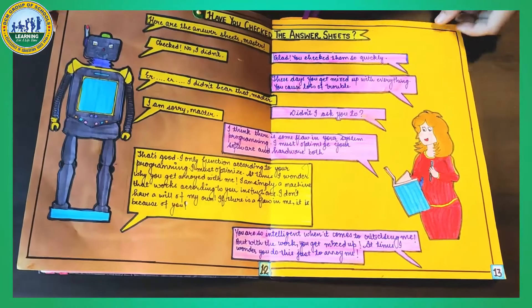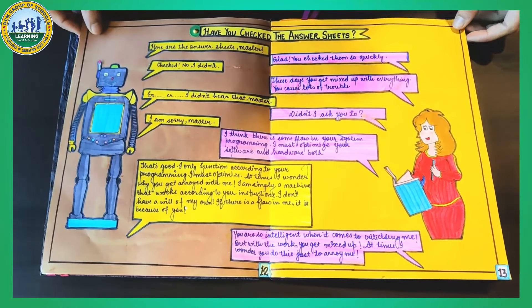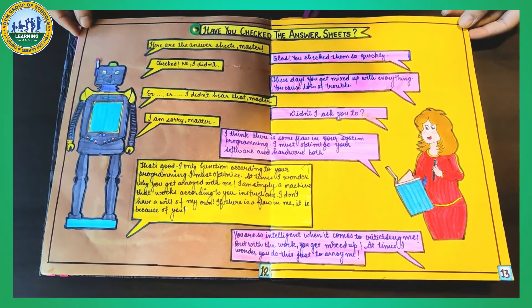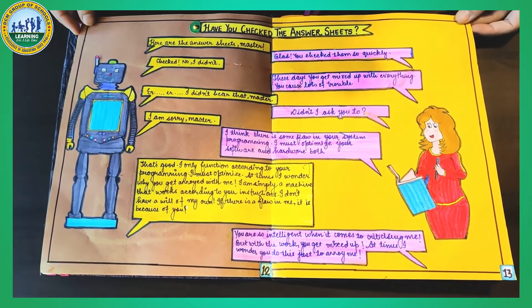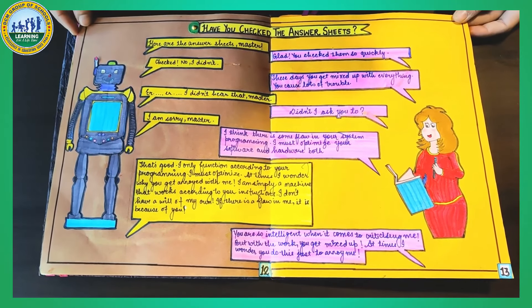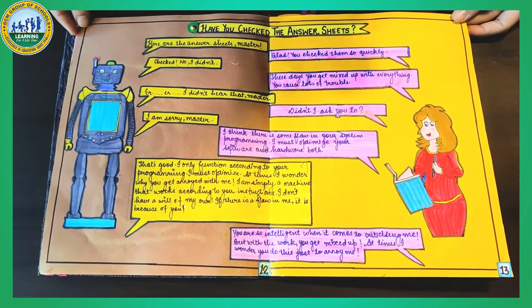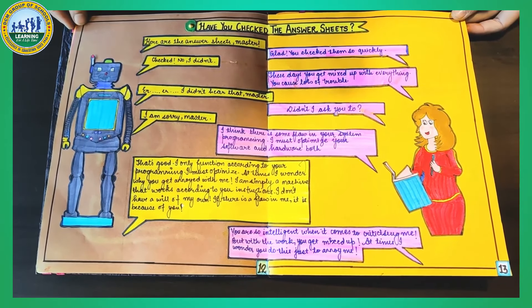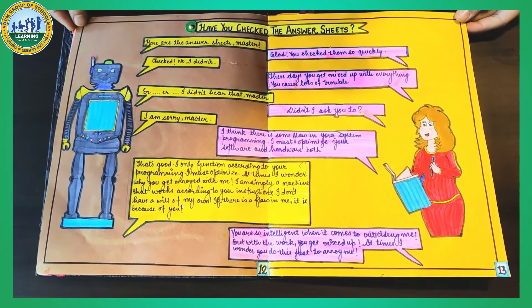This is a conversation between a teacher and a robot, showing how the robot misunderstood the orders and did malfunctioning.